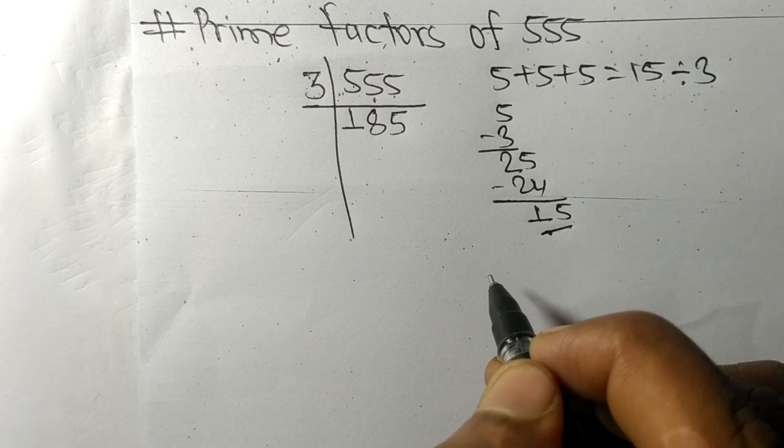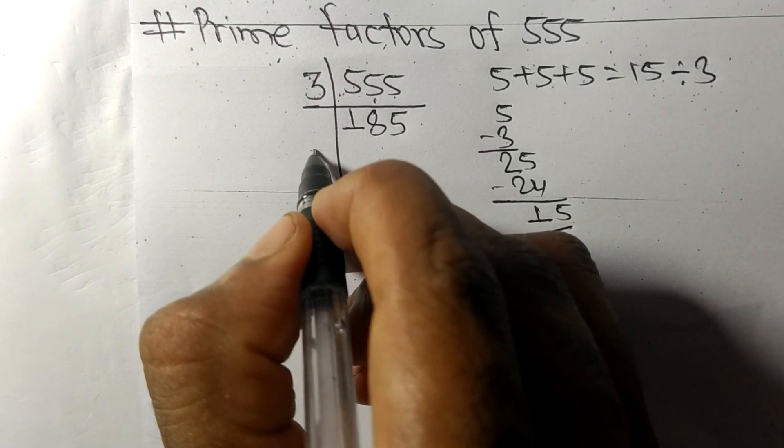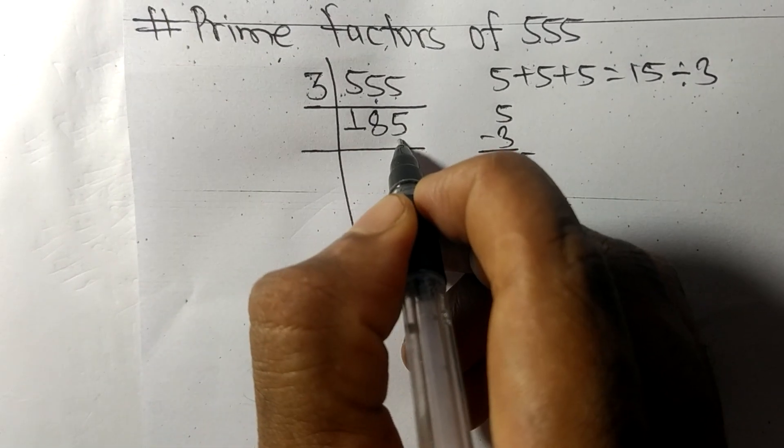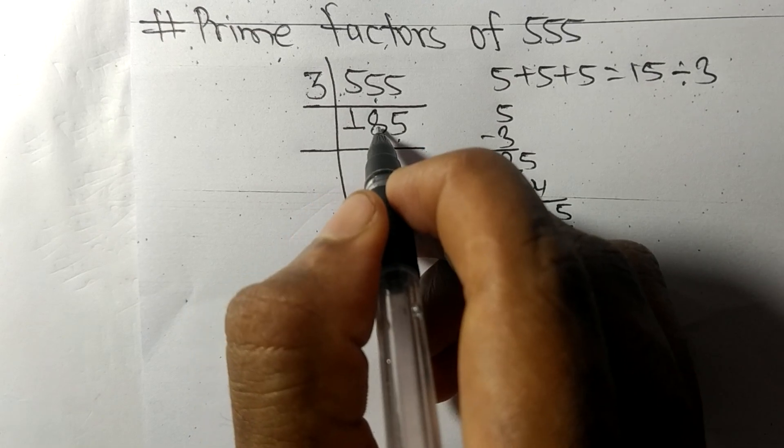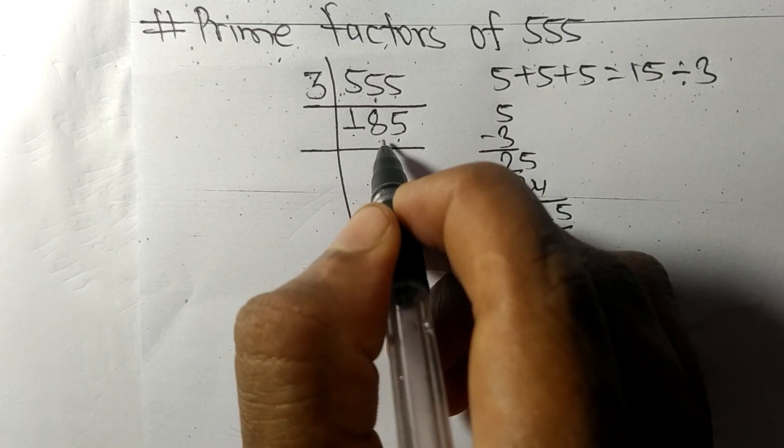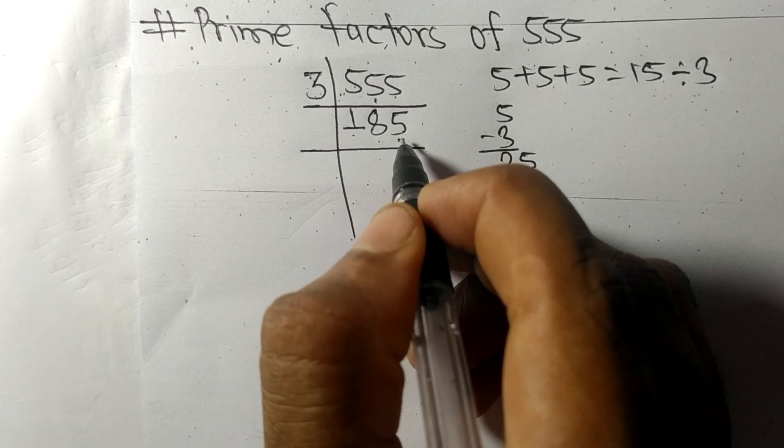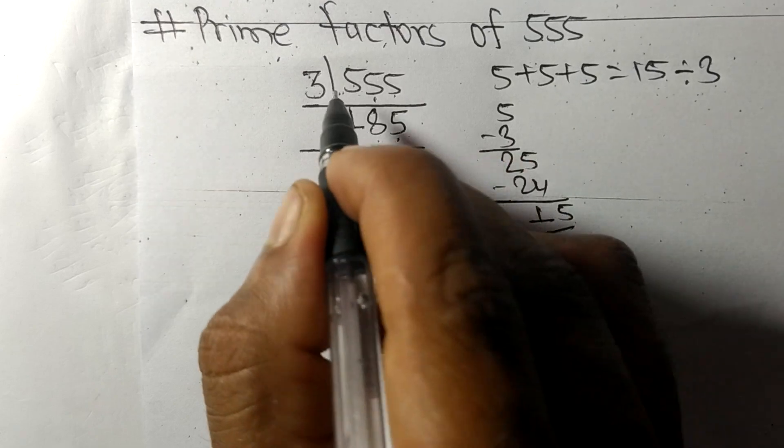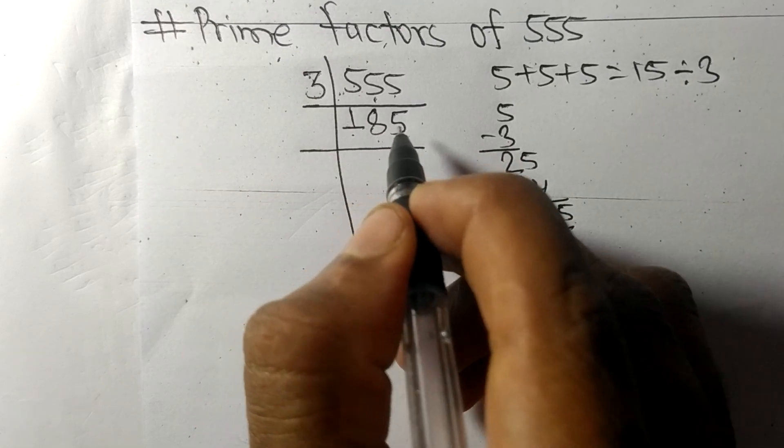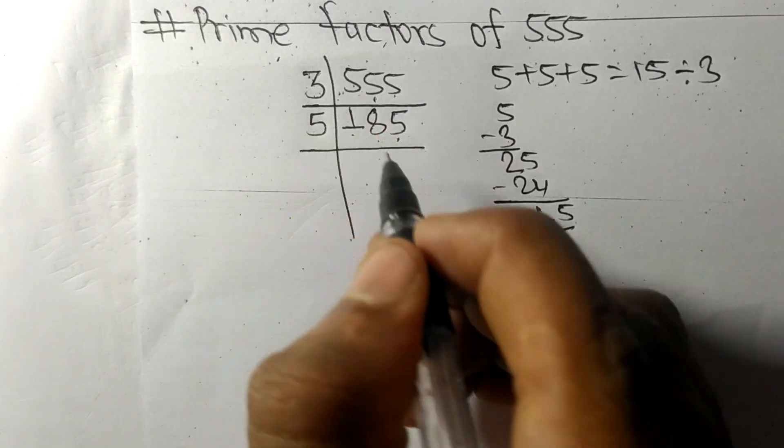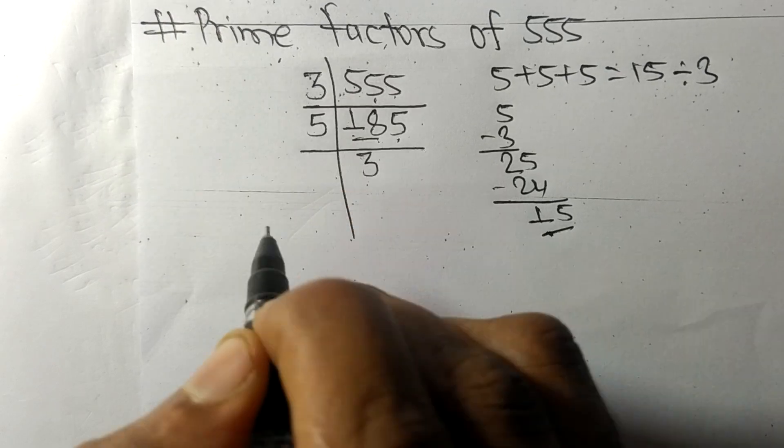Now we have 185 at the quotient. The sum is 1 plus 8 is 9, plus 5 is 14, which is not exactly divisible by 3, so it is divisible by 5. 5 times 3 is 15, remainder 3.